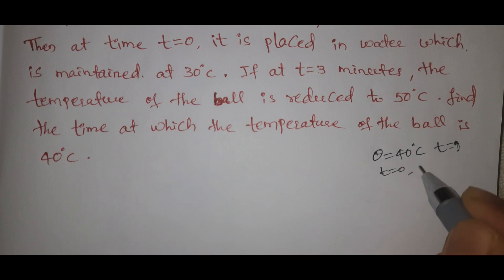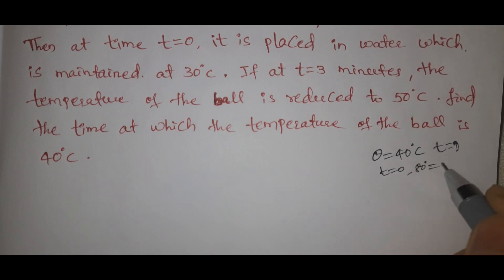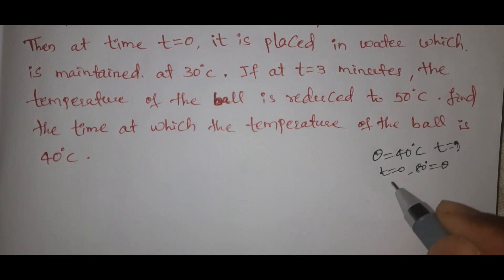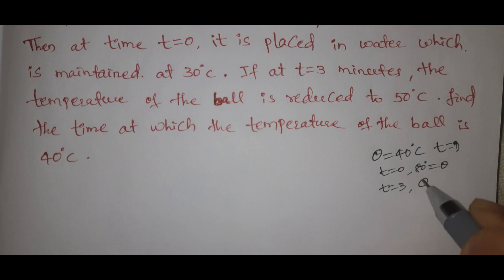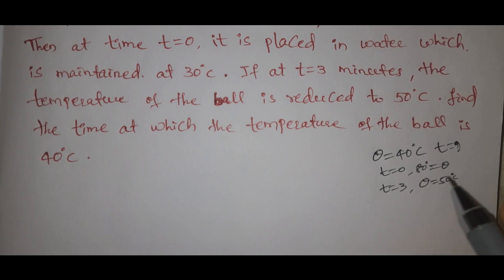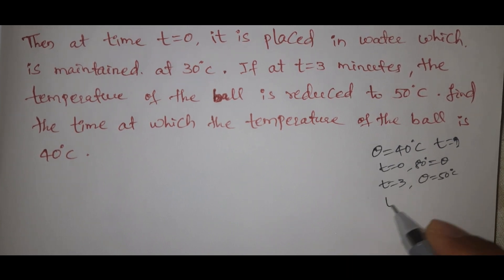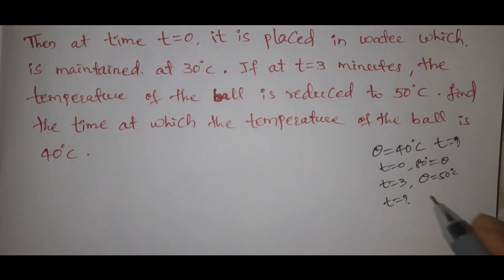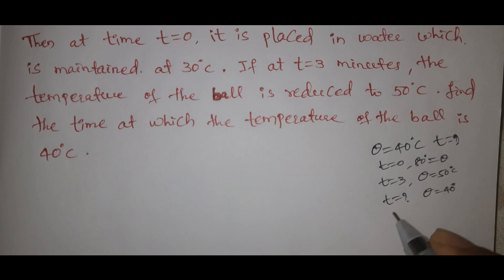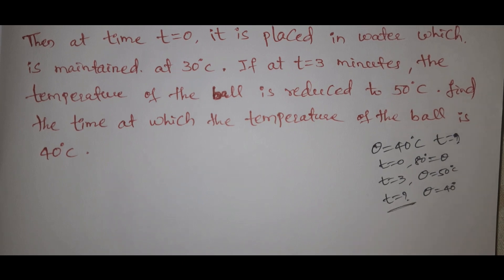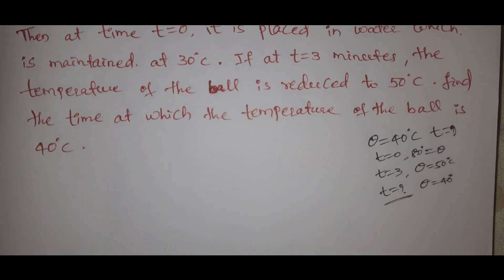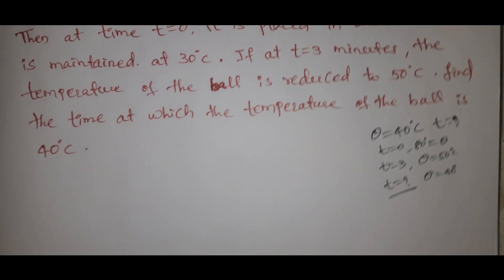Given: at t equal to 0, temperature equals 80 degrees. At t equal to 3 minutes, temperature equals 50 degrees. We need to find T when theta equals 40 degrees centigrade.